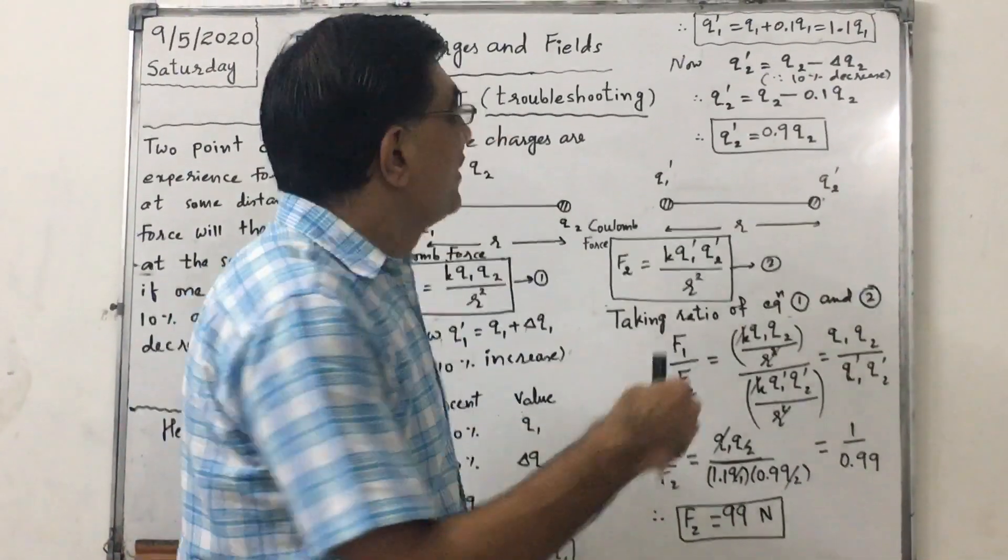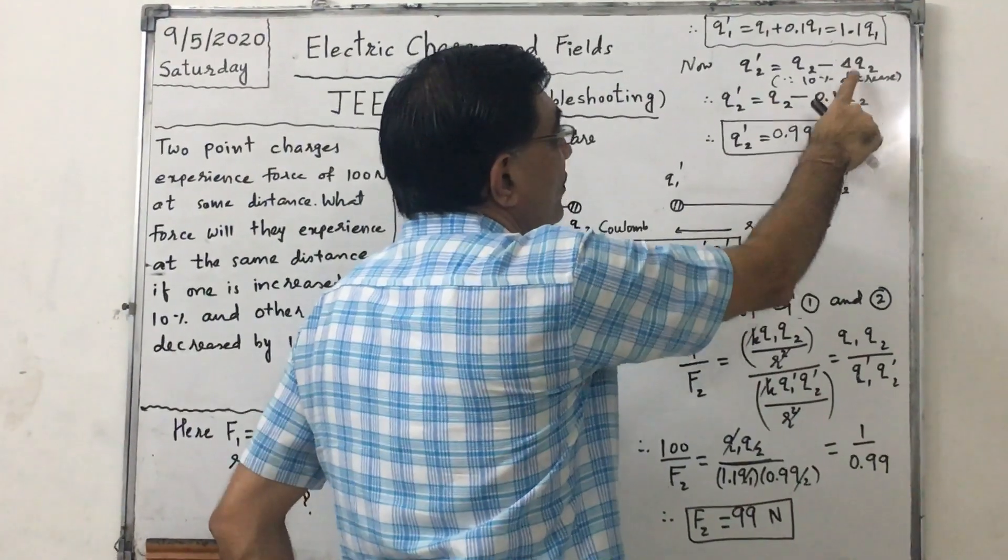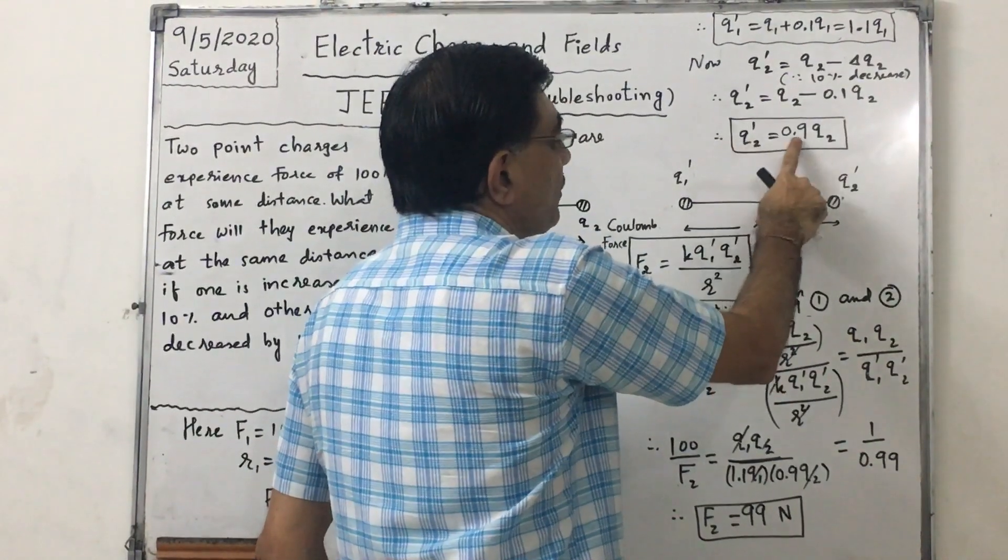But it is reduced, so Q2 dash equals Q2 minus delta Q2, where delta Q2 equals 0.1 Q2. So Q2 dash equals 0.9 Q2. Now the Coulomb force between these two.